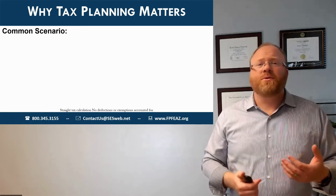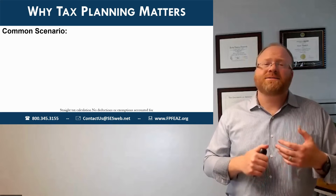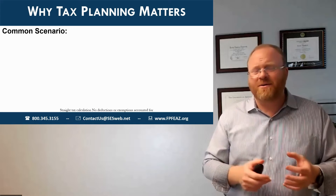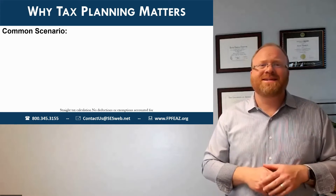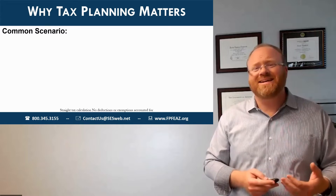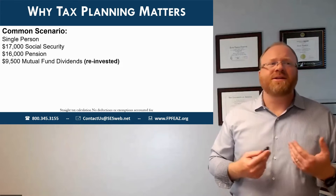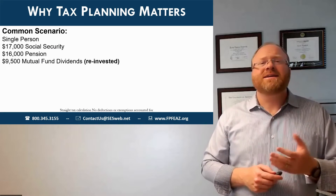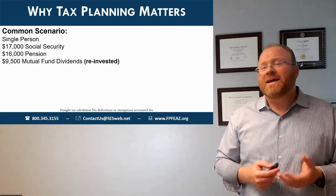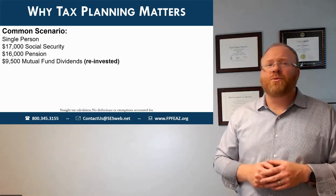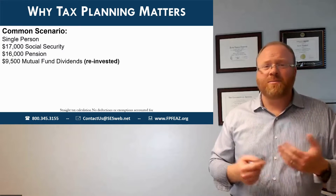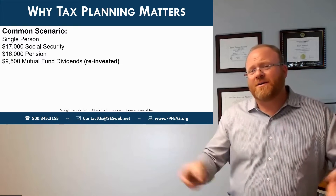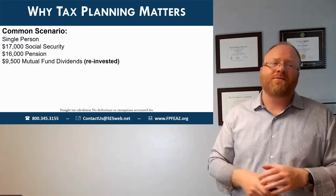I'm going to run through a couple of scenarios to help us get perspective on what we mean by tax planning. I've stripped these down — we don't have the complications of the full tax returns; it's really just helping you see the concepts. So let's start with a single person with $17,000 in Social Security, $16,000 pension, and $9,500 in mutual fund dividends that are being reinvested. She doesn't need the money right now, so the portfolio is just kicking out and reinvesting.